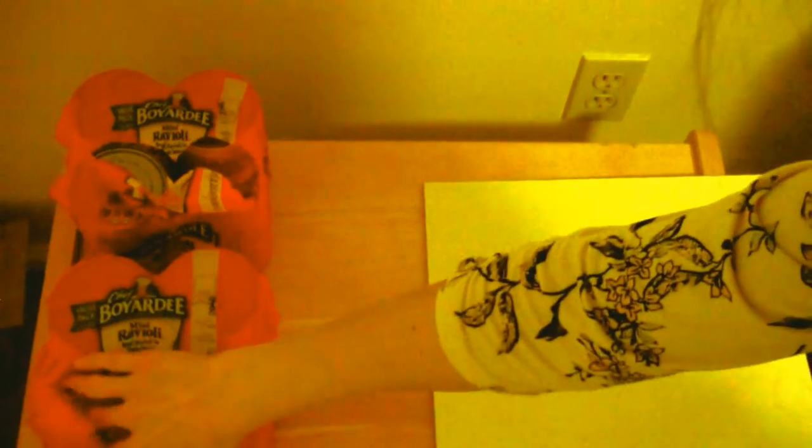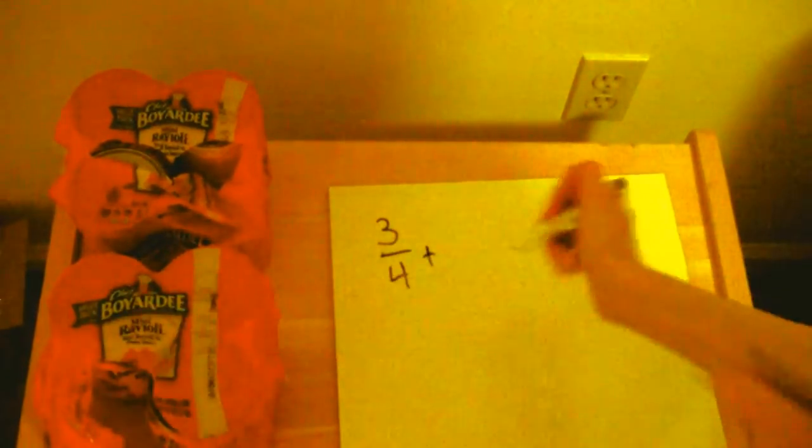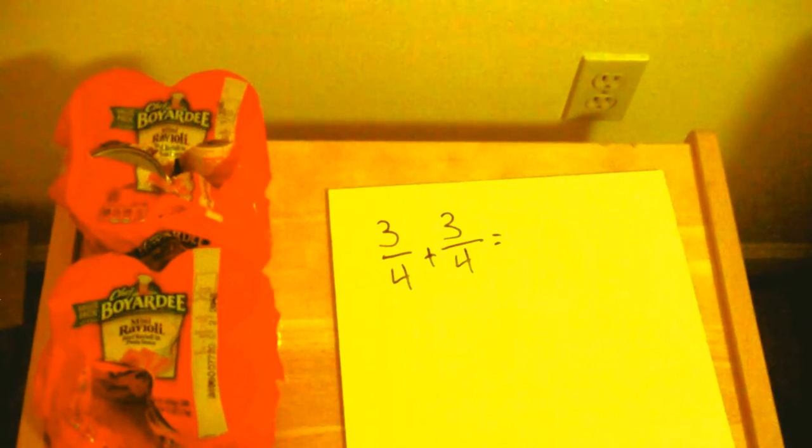Let's go ahead and take a look at this problem. Someone has eaten one of the cans out of this pack and one of the cans out of this pack, leaving two packs that are only a fraction full. I have three-fourths of this pack plus three-fourths of this pack. How much do I have total of packs of mini raviolis?